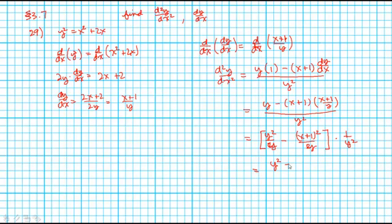I end up with y squared minus x plus 1 quantity squared all over y cubed. Check the answer. And that's what they've got too. But they do another simplification step.